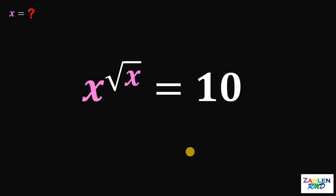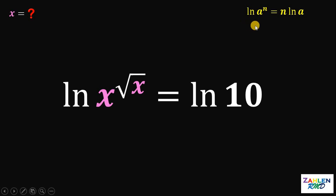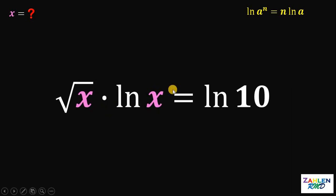The question is how are we going to answer this? Here's the step. First, take the natural log on both sides. This gives us ln of x raised to the square root of x equals ln of 10. You might wonder why we choose the natural log instead of the common logarithm — we will see the purpose later on. Using the property of natural log: ln of a raised to n equals n multiplied by ln of a. Therefore, the left-hand side can be written as square root of x multiplied by ln of x.